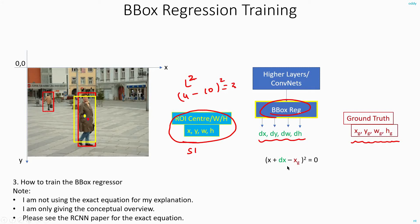And to calculate the loss, now what you do is you just add x plus dx and subtract with the ground truth value here and just square it. You will get some value here. This value you backpropagate through the bounding box regressor.